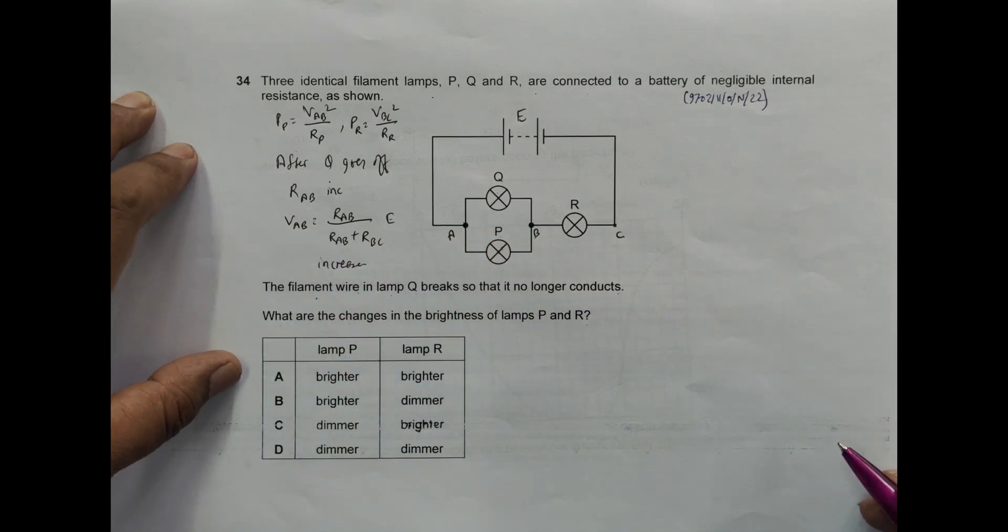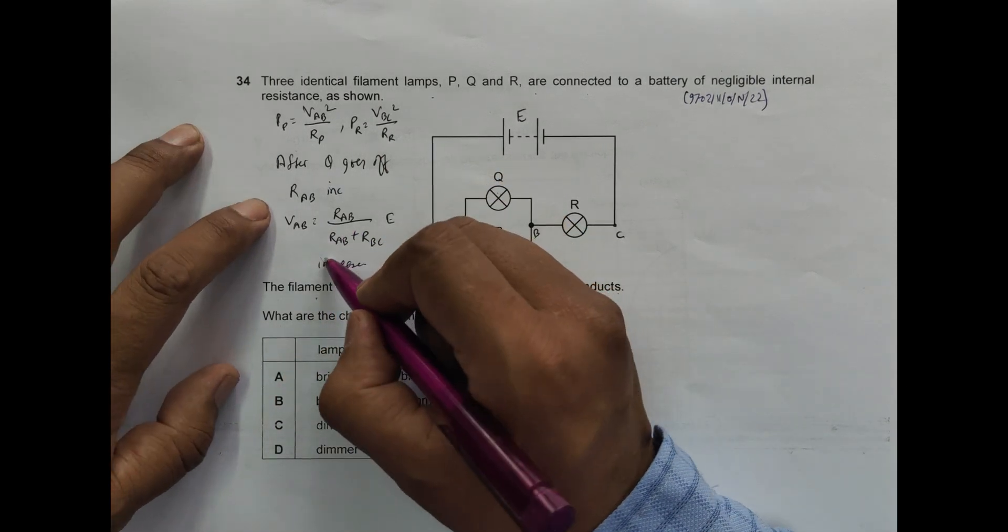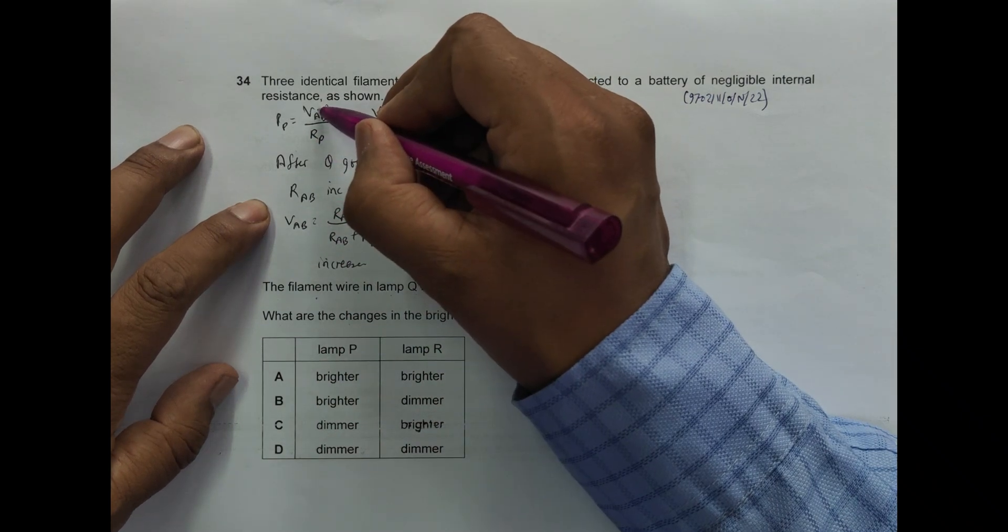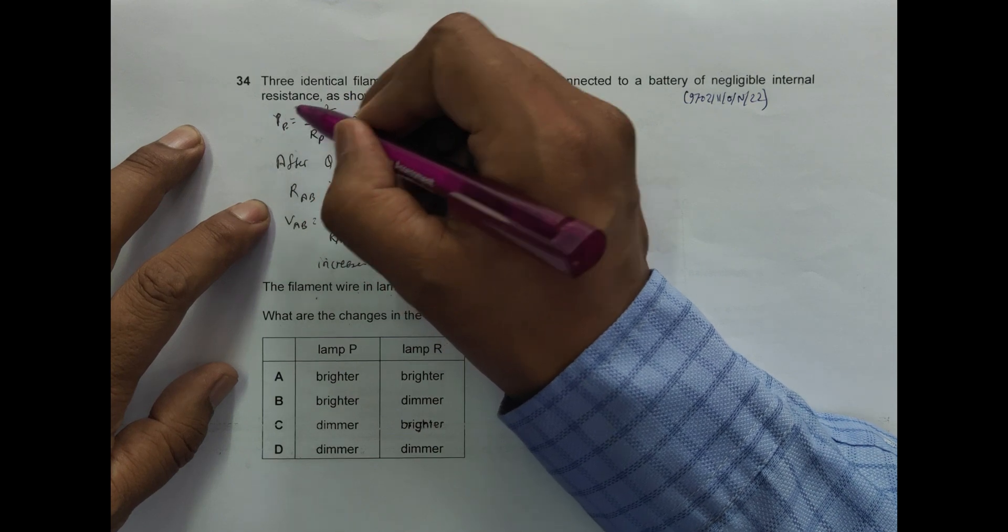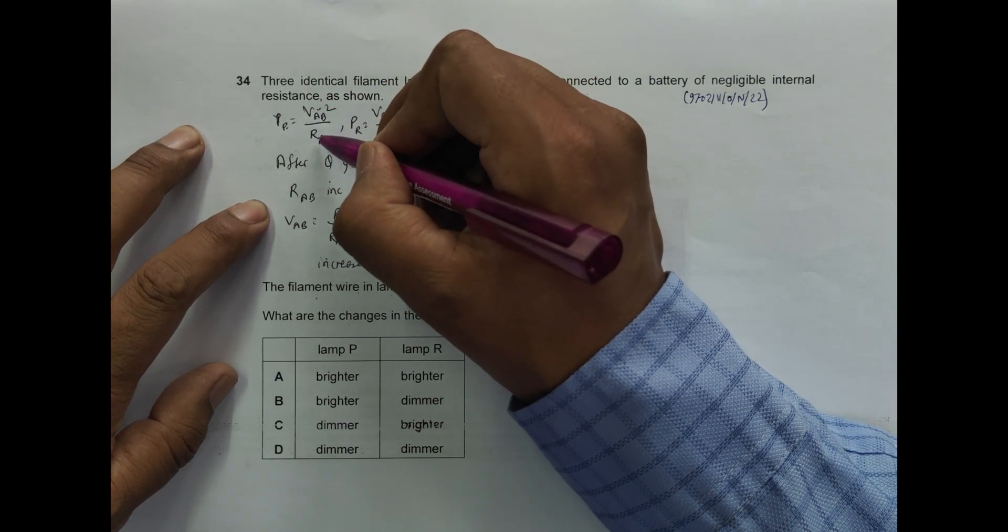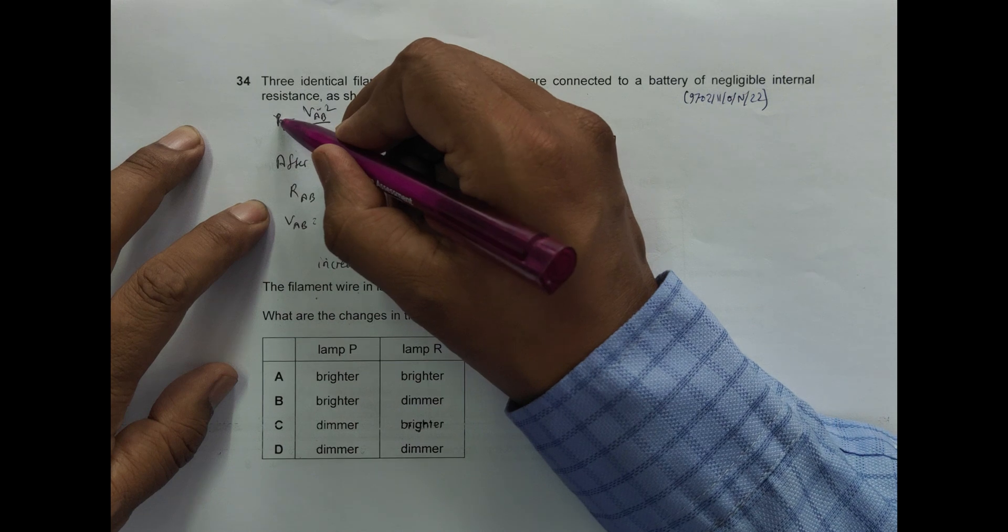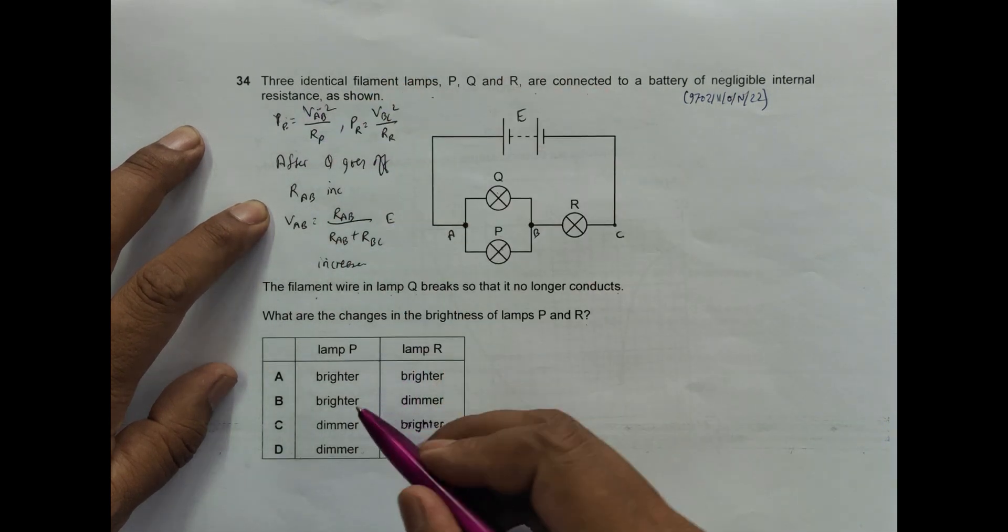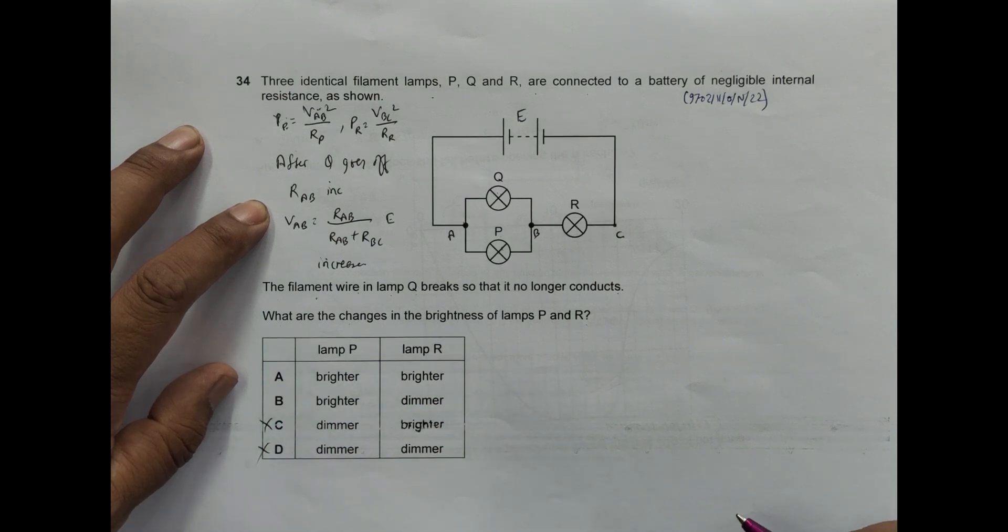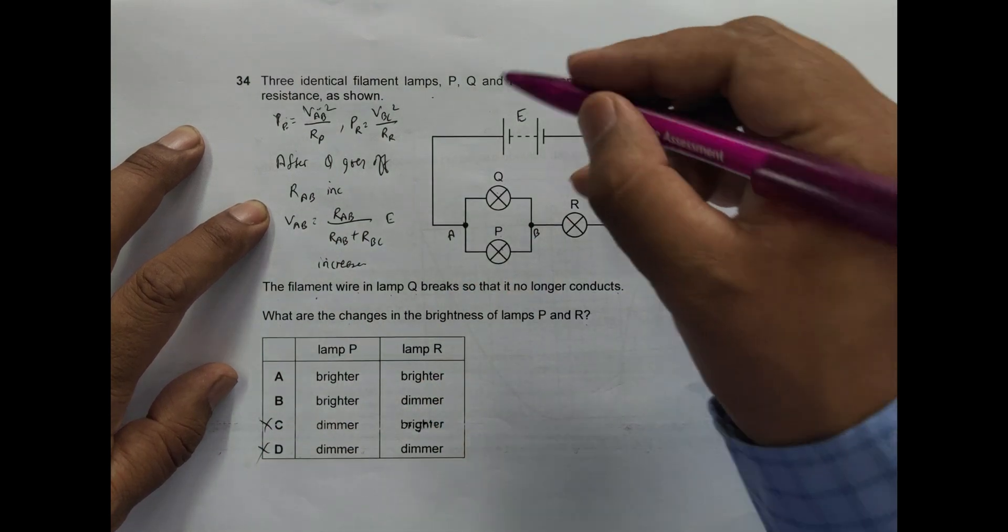R_AB by R_AB plus R_BC times E. This thing should also increase. V_AB should increase. So now if V_AB increases, R_P is constant, so power P should increase. So this means that it must get brighter. So P should get brighter. These two options disqualify.